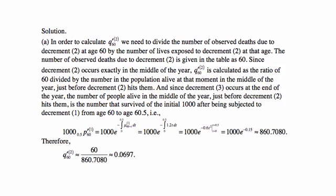The integral of 1.2t is 0.6t², evaluated from 0 to 0.5. At t = 0.5, t² = 0.25, so 0.6 × 0.25 = 0.15. Therefore the survival probability is e^(−0.15), giving approximately 860.708 survivors. The probability q'₆₀⁽²⁾ is then 60 divided by 860.708, which equals approximately 0.0697.